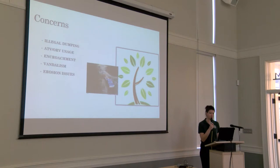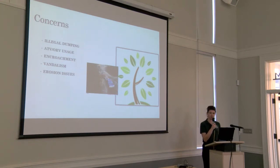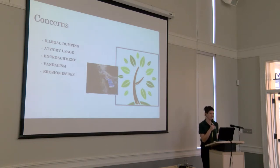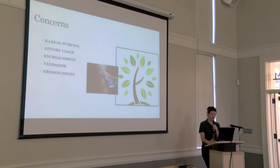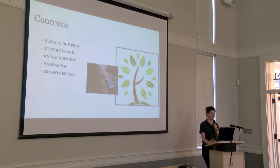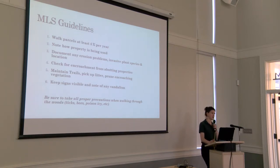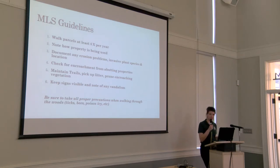Having more people out on the parcels using them responsibly is a deterrence in itself of bad activities. Issues to watch for include illegal dumping, ATV usage, encroachment — people clearing parts of the conservation area for their own uses — vandalism, and erosion issues. A lot of these issues have really dwindled due to the gates we've put up and more surveillance. Our department is about three people, so constant help is always desired for monitoring these lands.